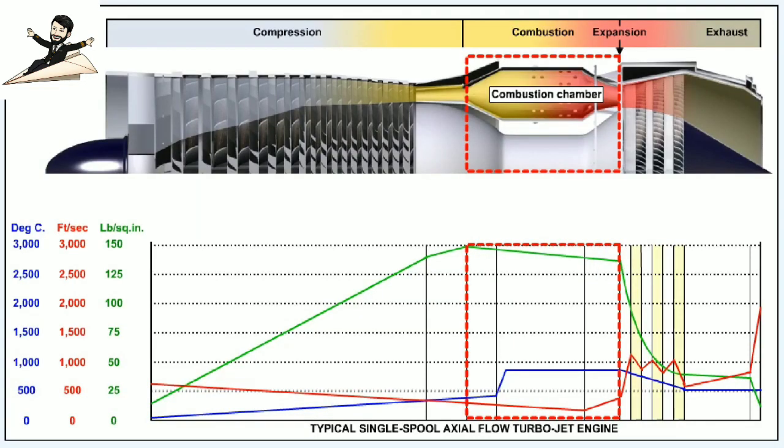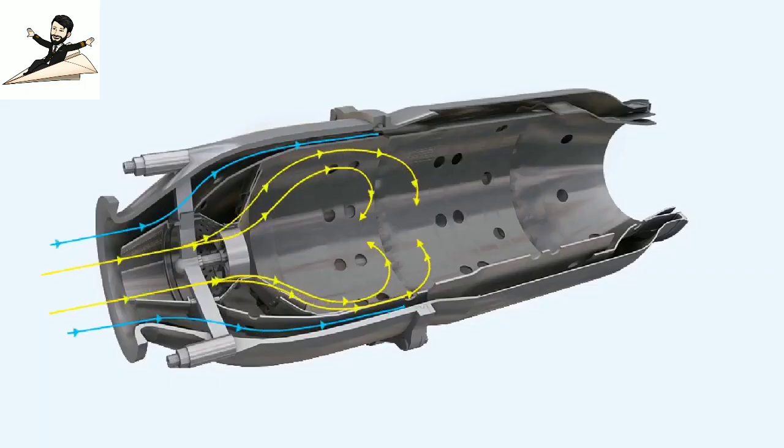In the introduction lesson, we stated that combustion theoretically occurs at constant pressure. In fact, a small pressure loss does occur as the gas passes from the compressor end of the combustion chamber to the turbine end. This loss is caused by having to provide adequate turbulence and mixing. Losses vary from 3 to 8 percent of the pressure at the entrance to the combustion chamber.